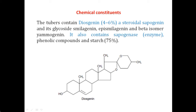Dioscorea also contains the enzyme sapogenase — this is a unique and important point from an entrance exam perspective. Other than chemical constituents, the enzyme found in Dioscorea is sapogenase, named after the saponin category. Additional constituents include phenolic compounds and starch. The two key things to remember are diosgenin and the enzyme sapogenase.